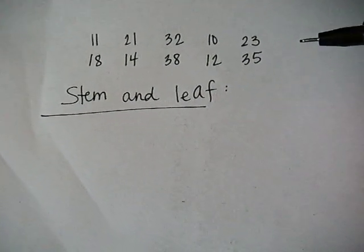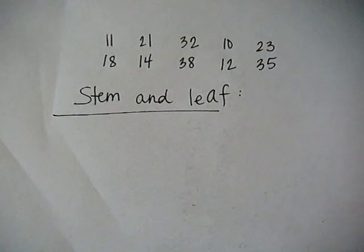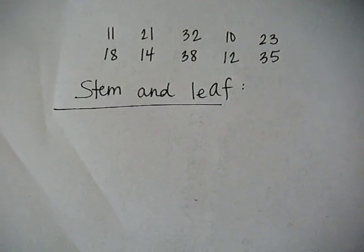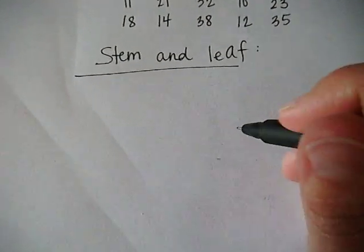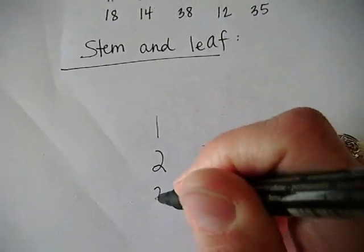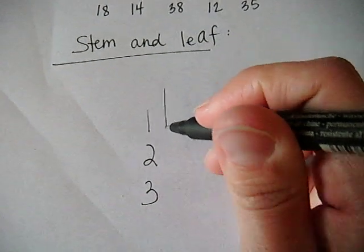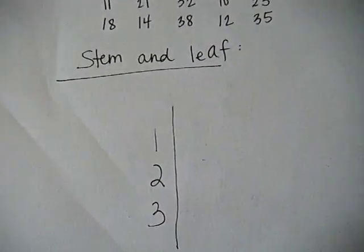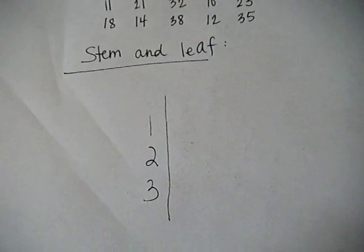So we have two digit numbers between 10 and 38. So our stems are going to go on the left hand side. They're going to be the numbers 1, 2, and 3. So we draw the line here and then we go back and fill in the leaves.